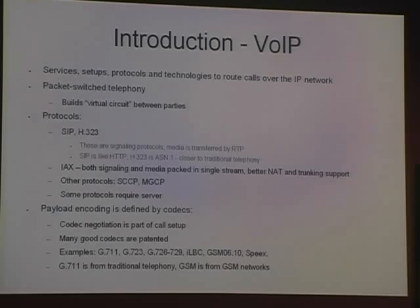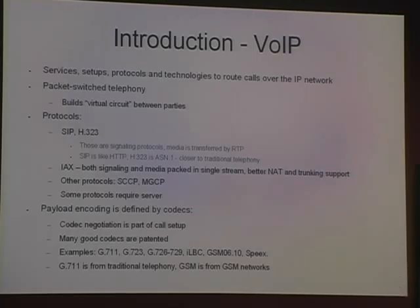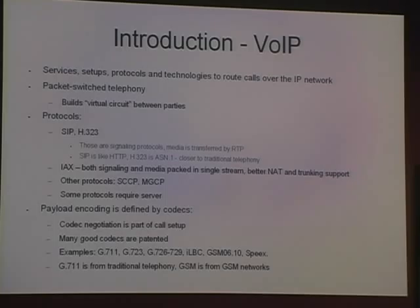IAX has advantages and disadvantages. The advantage is that it can easily penetrate NAT. The disadvantage is that, unlike SIP or H.323 where media can be routed directly between endpoints, with IAX you need to pass the media through the server. There are also other protocols such as SCCP and MGCP — Media Gateway Control Protocol — which are used for specific purposes rather than being generic like SIP or H.323. For example, SCCP is a proprietary Cisco protocol used only in Cisco IP phones. Some of these protocols require a server to operate.